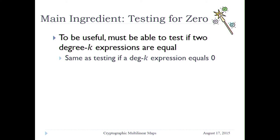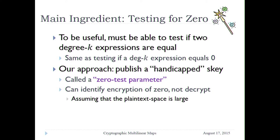So the main ingredient that separates multilinear maps is this testing for zero. To be useful, you need to be able to test if two degree-k expressions are equal — which is the same as testing if a degree-k expression equals zero, because you can subtract. The approach all current constructions take is: start from something that looks like a somewhat homomorphic encryption scheme, then publish a handicapped version of the secret key called the zero test parameter. It lets you check that a degree-k expression is zero, but it does not let you decrypt. The distinction is only meaningful if you work with a large space — if you encrypt bits, testing for zero and decrypting is the same thing.